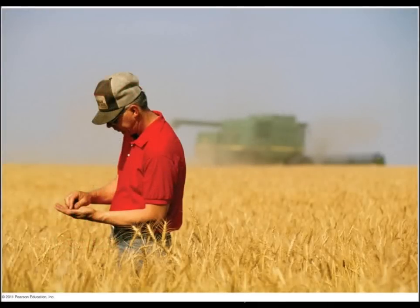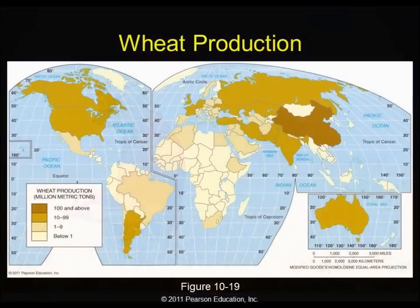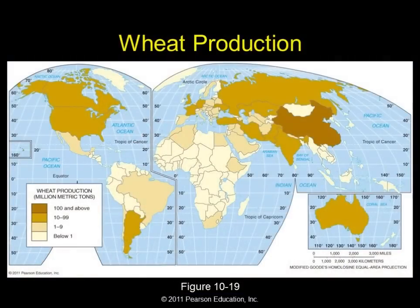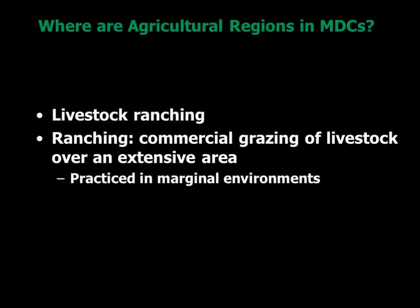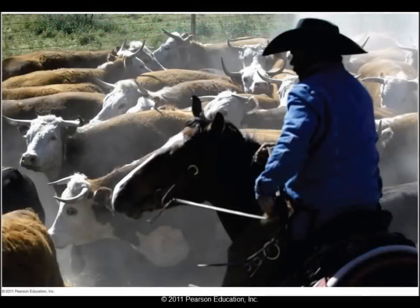Know what double cropping is. Then in MDCs, commercial agriculture — one of the most common forms is mixed crop and livestock farming. Know what that is: where we're growing both crops and animals and they are helping each other, and know that entire process.